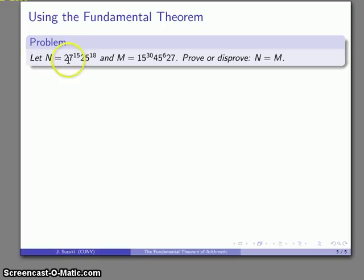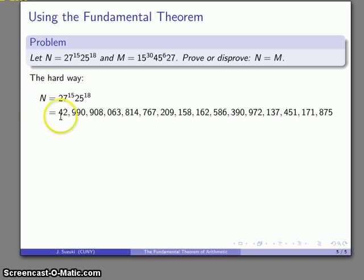Let N be 27 to the 15th times 25 to the 18th and M be 15 to the 30th times 45 to the 6th times 27. And let's see if N is equal to M. So again, let's do this the hard way. So N is 15 27's multiplied together and then multiplied by 18 25's. So I can do that and about a week from now I'll come back and tell you that the answer is this. So here's what I get when I multiply all those numbers together, this huge number here.